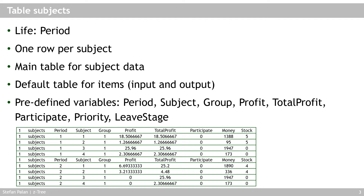The priority variable determines which subject enters the stage first when a stage is set to allow only one subject at a time. The leave_stage variable can be set in a program — if you set it to one for any subject, they immediately leave the current active screen. For example, you could have a button that ends the period: one subject clicks it, you set leave_stage to one for all subjects, and everyone immediately leaves the stage.